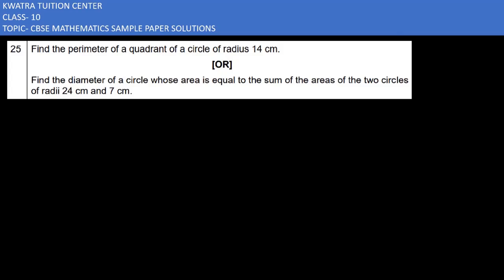Let's start with question number 25. Find the perimeter of a quadrant of a circle of radius 14 cm.